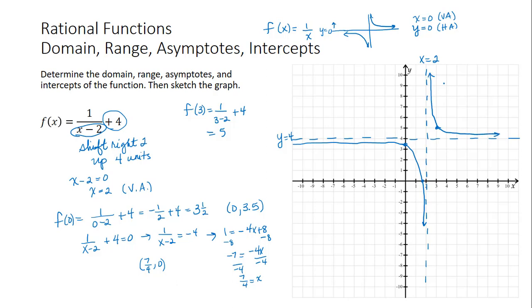So the domain of this function is all reals except for 2. So we can write that in interval notation as negative infinity to 2, union 2 to infinity.